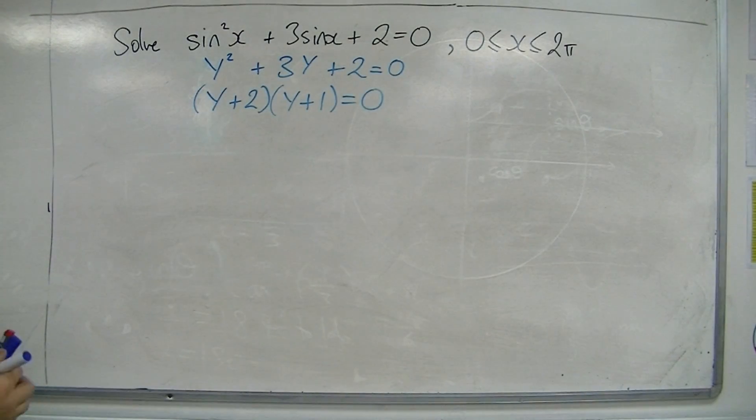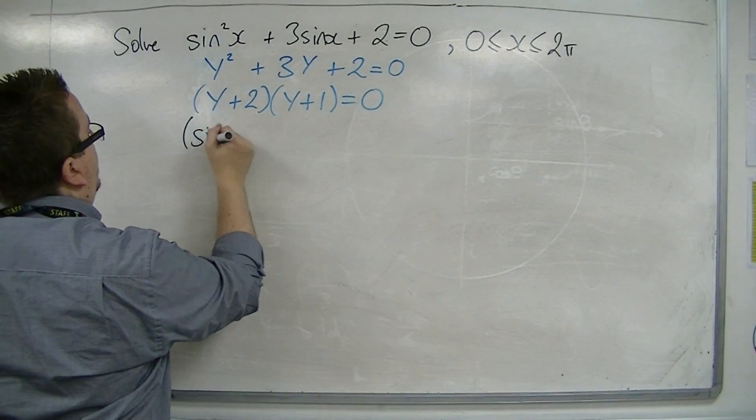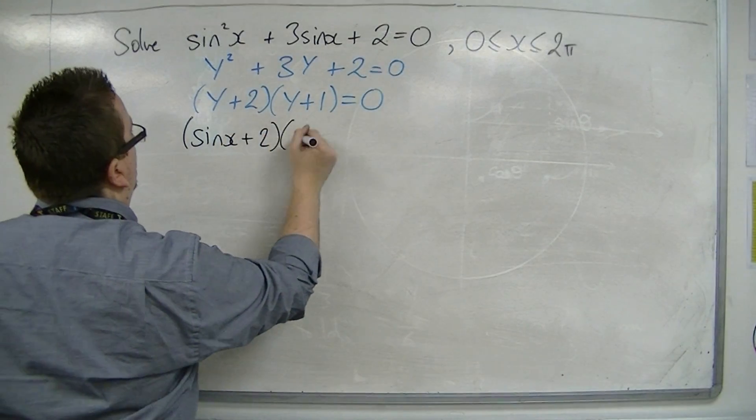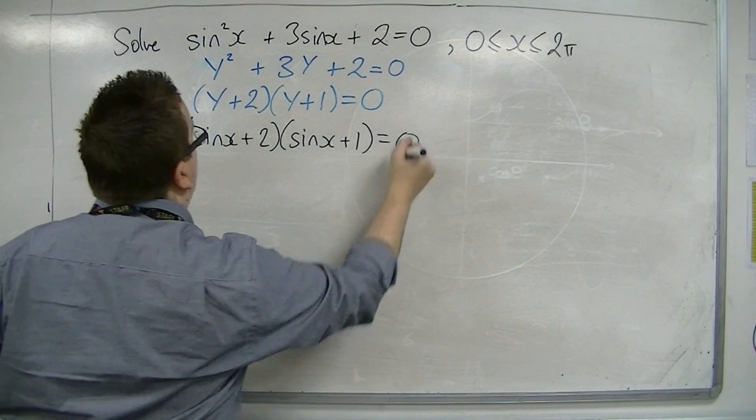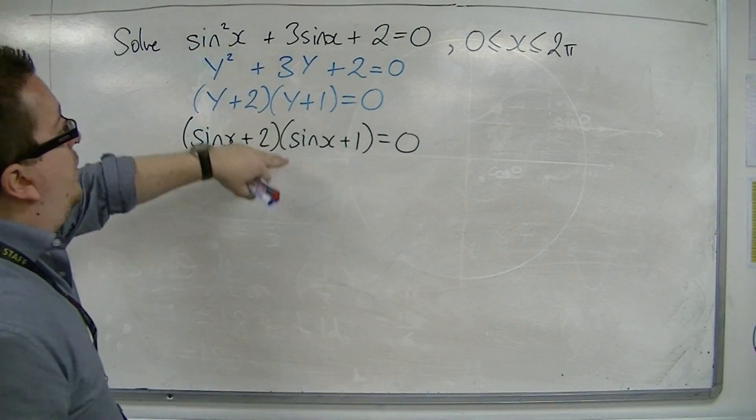And so if we put the sine x back in, we actually have sine x plus 2, sine x plus 1 equals 0. So I've effectively factorised this equation.